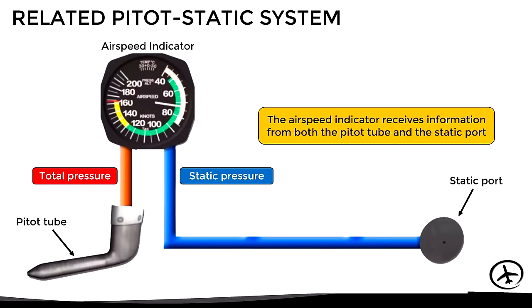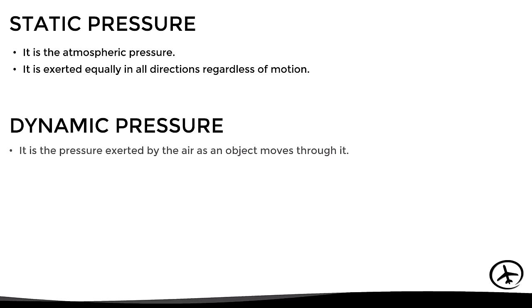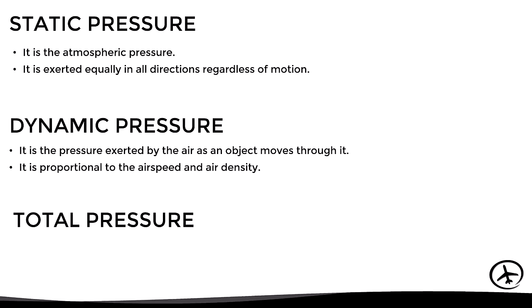The pitot tube provides total pressure while the static port provides static pressure, or atmospheric pressure. To understand why the airspeed indicator needs these two types of pressure, we must review their definitions. Static pressure is the same as atmospheric pressure and is exerted equally in all directions regardless of whether the object is moving or still. Dynamic pressure is the pressure produced by the air when an object moves through it and is proportional to speed and air density.